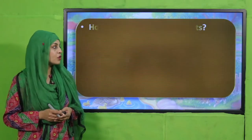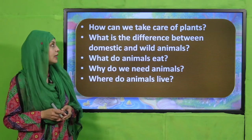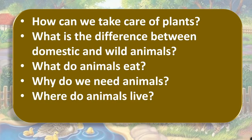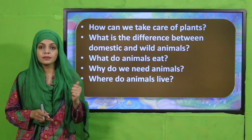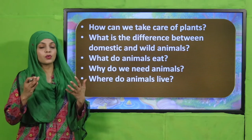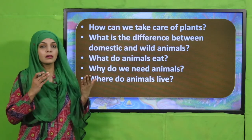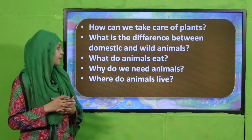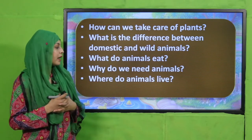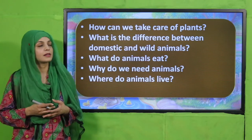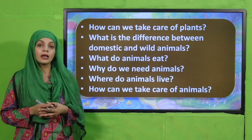Now is the time for evaluation. You can download the assessment sheet. Let's do a quick review: How can we take care of plants? By providing them with water and not plucking them. What is the difference between domestic and wild animals? Domestic animals are those we can keep in our houses; wild animals we cannot. What do animals eat? Meat, grass, or both. Why do we need animals? They provide us with food, shelter, and transport. Where do animals live? Some underground, some in nests. Can we take care of wild animals? Yes, by not hunting them and not cutting down trees.